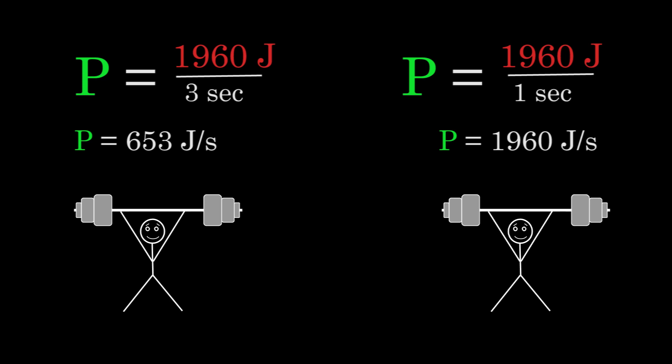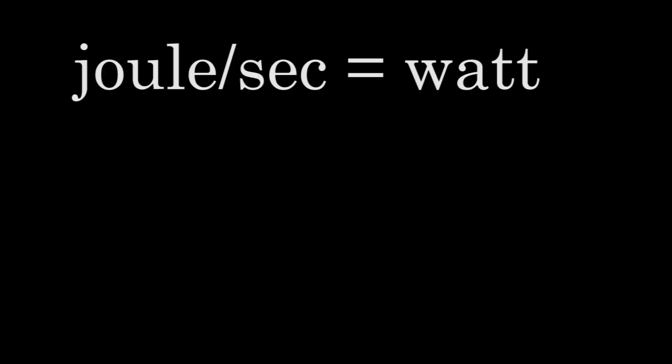If we plug those times into the definition of power, we'll find that the power output of the weightlifter on the right during his lift is 1,960 joules per second. And the power output of the weightlifter on the left during his lift is 653 joules per second. A joule per second is named a watt, after the Scottish engineer James Watt. And the watt is abbreviated with a capital W.